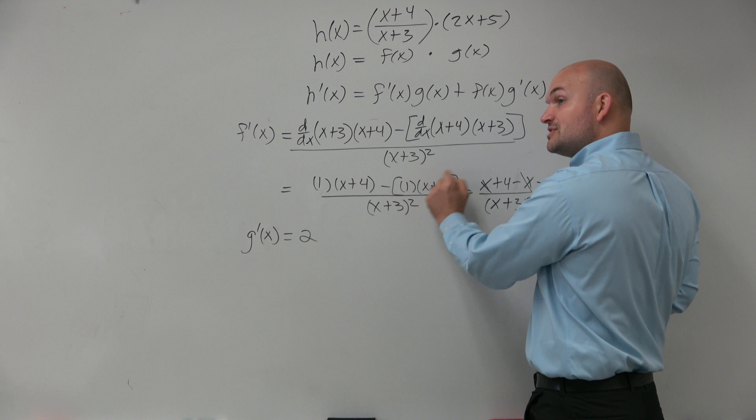Because what happened is I distributed that negative across the brackets and got negative x minus 3. So I use these brackets on the quotient rule because I — just like yourself — will make mistakes and forget. To prevent making that distributive property mistake, I make sure I put brackets around it.